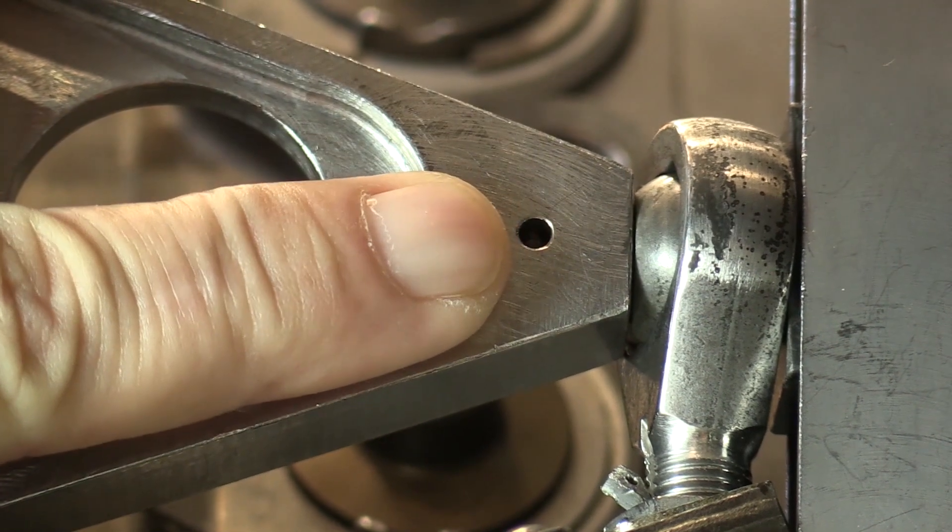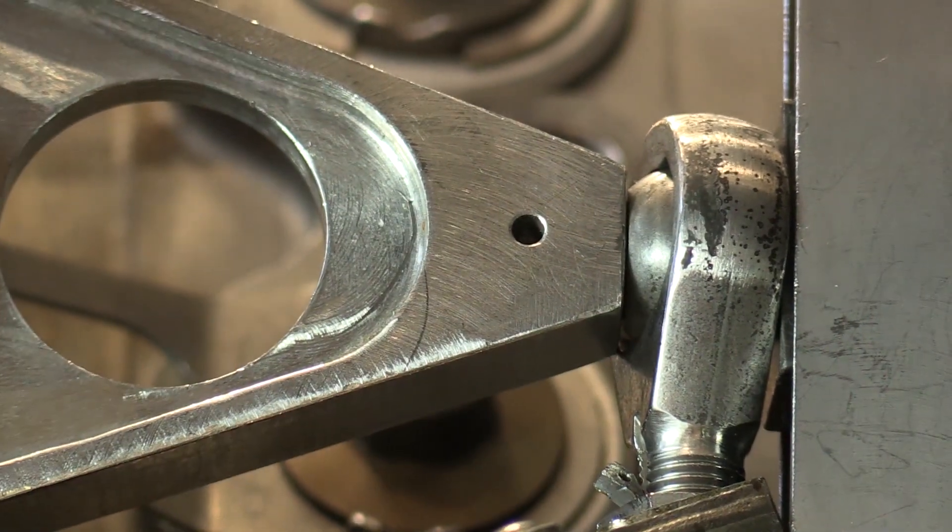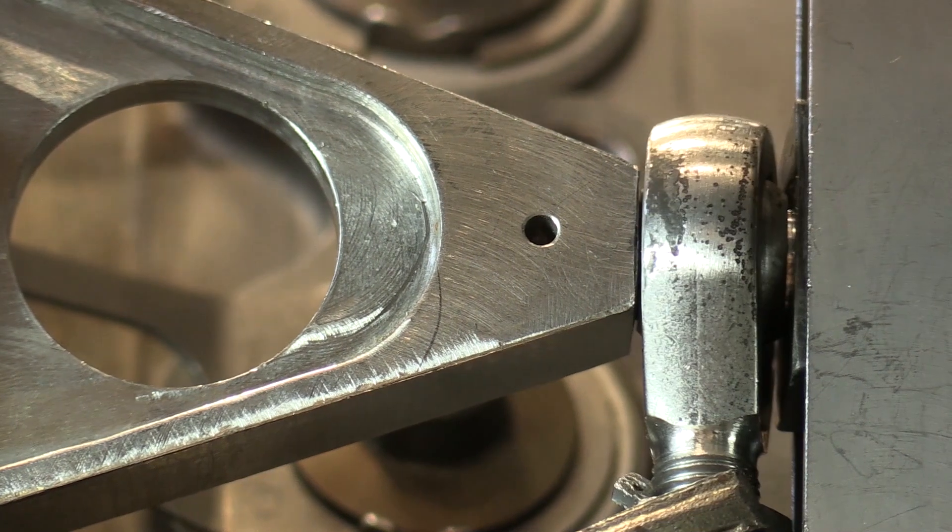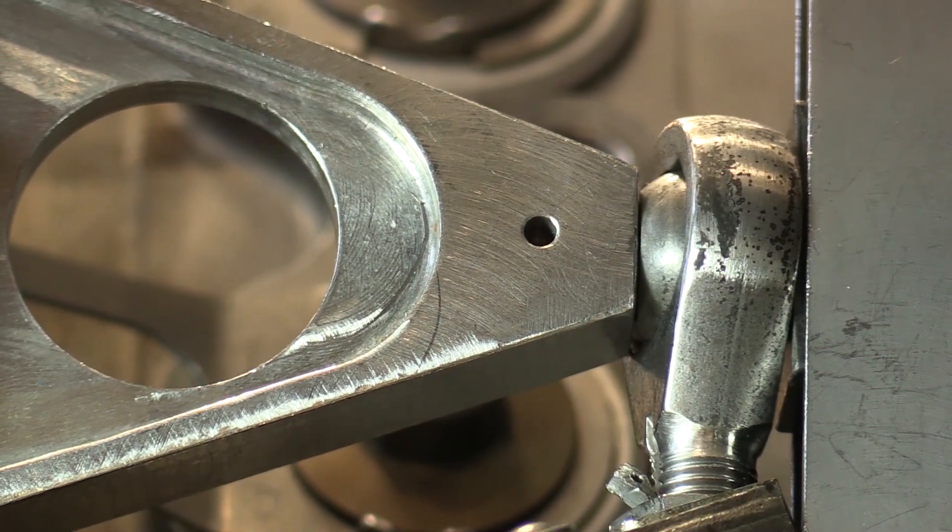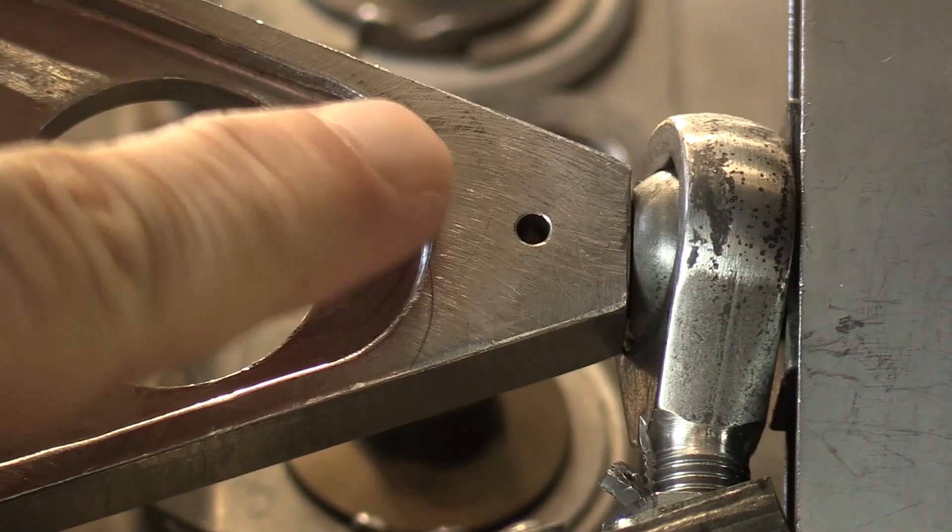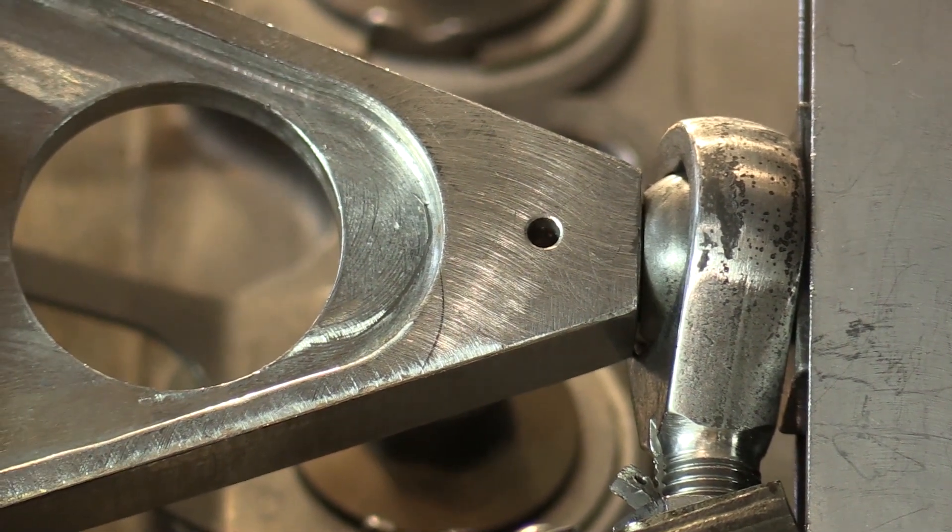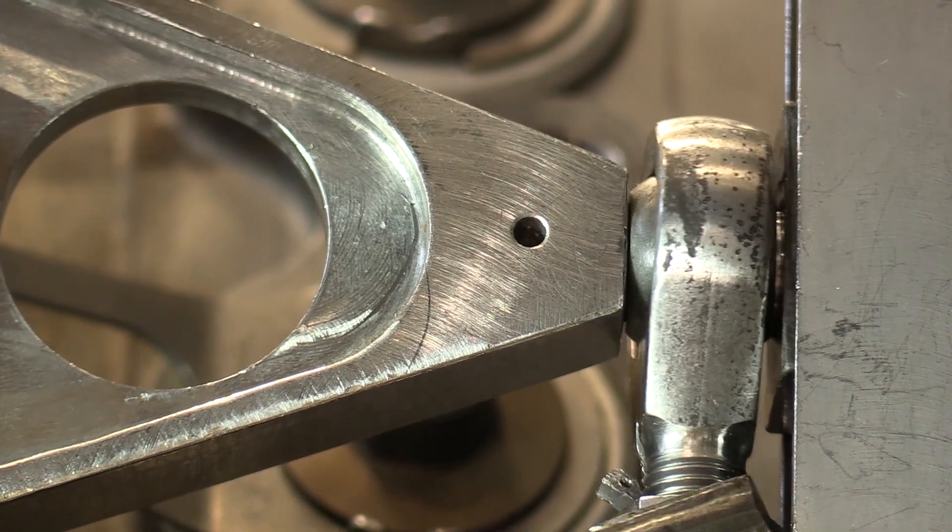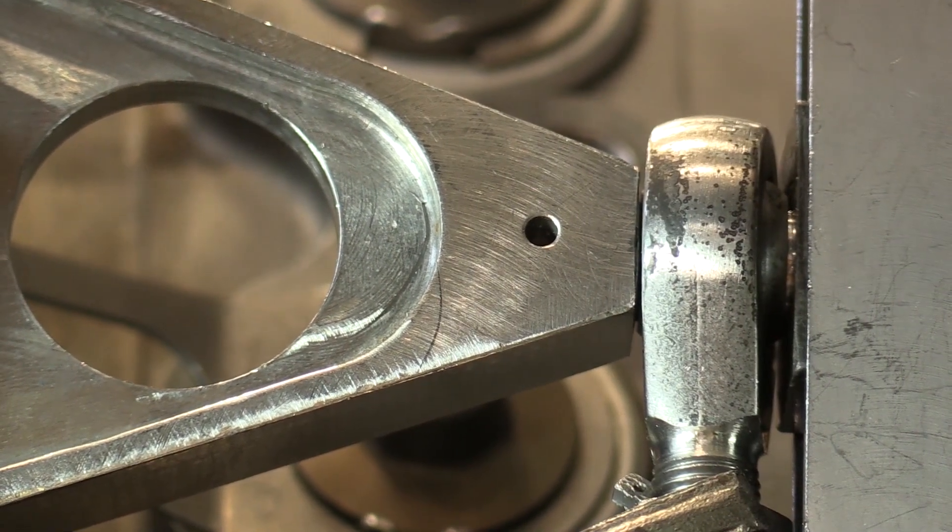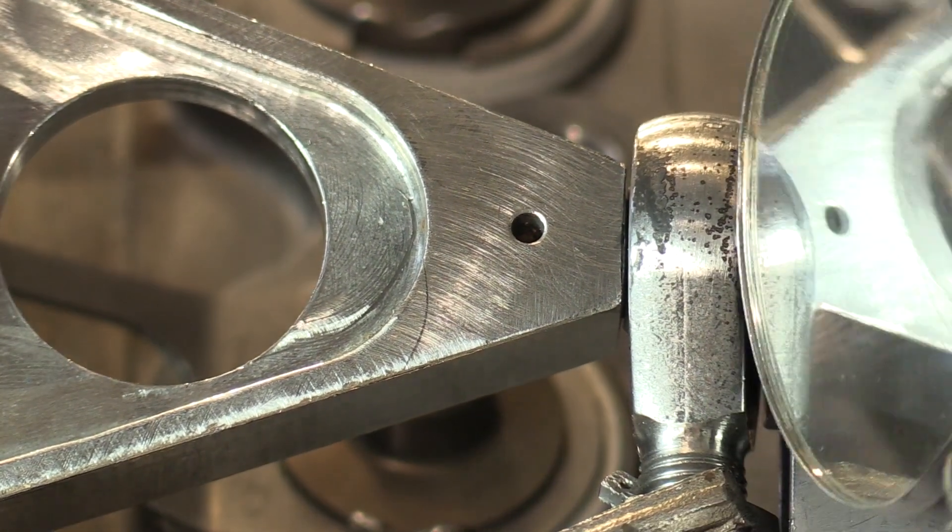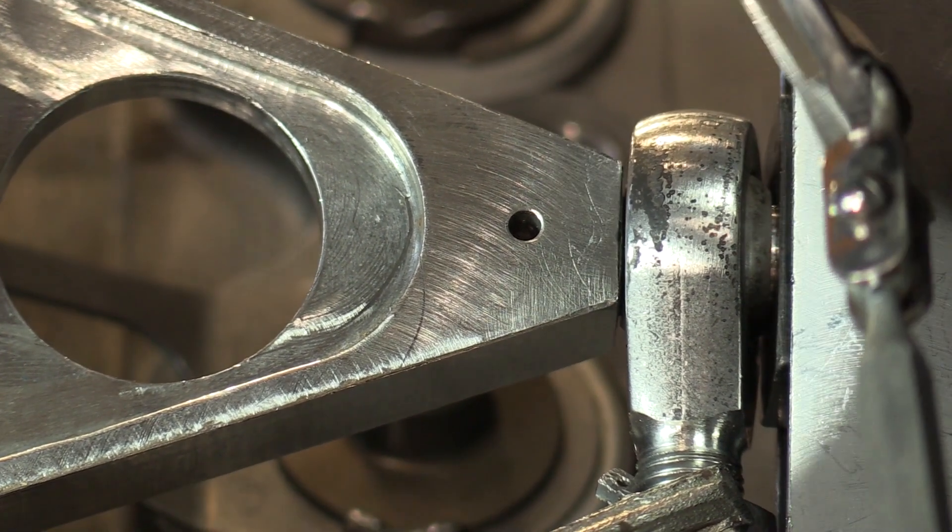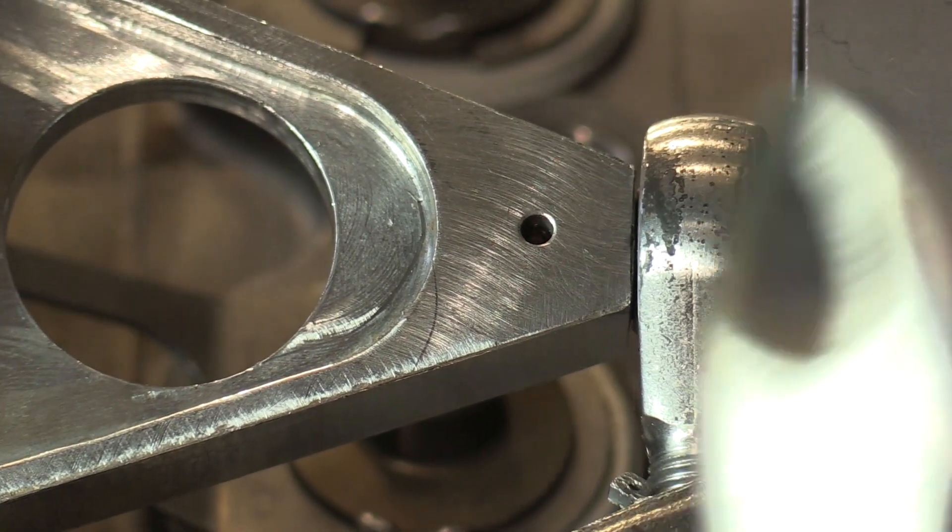So when we first approach the actuator, first thing we want to do is inspect that spherical bearing for evidence of corrosion, typically pitting on the surface of the spherical bearing itself. The aft side you can see pretty readily, and for the forward side you may want to use an inspection mirror and a flashlight to inspect both sides of that bearing.